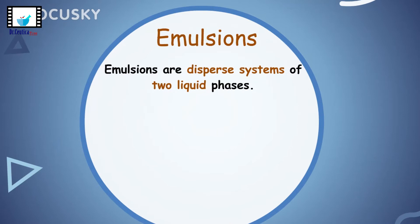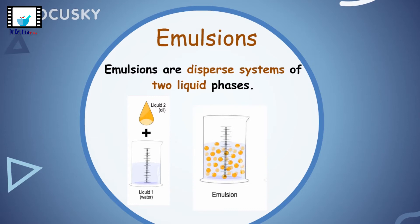A very simple definition of emulsions is that they are dispersed systems of two liquid phases. We have insoluble liquid droplets distributed within another liquid. Similar to suspensions, emulsions are inherently unstable, and we will have a separate video on the different instability issues that pharmaceutical emulsions can have. But first, let's know emulsions in a bit more detail.